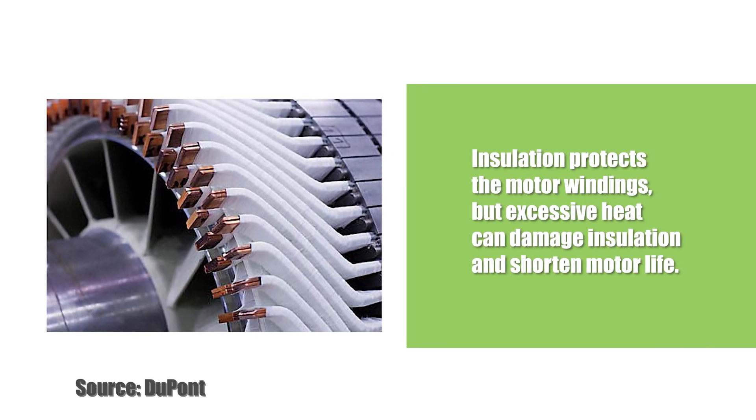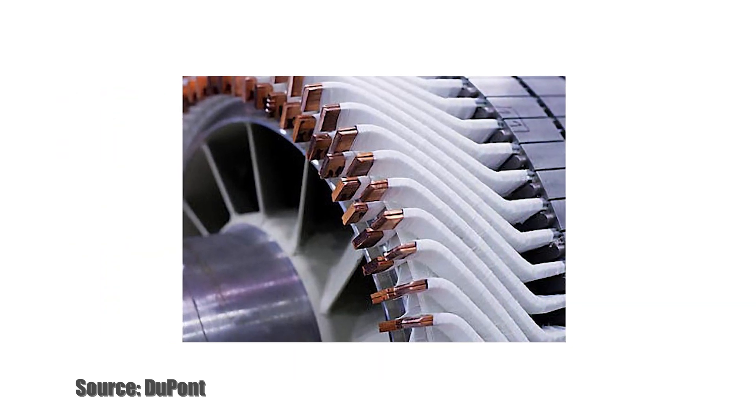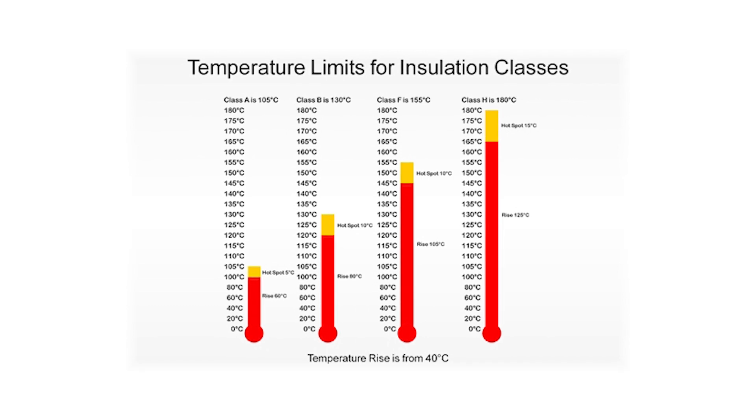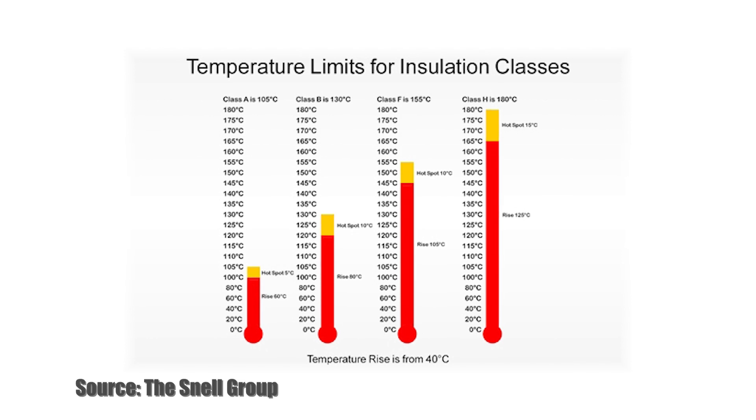To address the potential for failure of the insulation due to heat, the NEMA MG1 standard establishes four classes of motor insulation, which define the insulation system's ability to endure a specified temperature while providing a specific operating life. The NEMA insulation classes specify the maximum allowable temperature of the motor winding insulation under continuous operation that will provide a life of 20,000 hours.